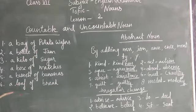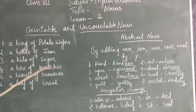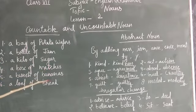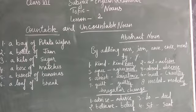You see that we say a loaf of bread, but we can't say a loaf of banana. A box of matches is correct, but we can't say a box of bananas. Is it clear? So the particular units of measures are for particular countable and uncountable nouns.